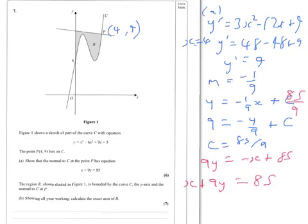The next part: the region R shown is bounded by the curve, the y-axis, and the normal. Showing all your work, calculate the exact area of R. So what we've got to do here is find the area under the curve, which is found by integrating the curve, and then subtract that from the area of this trapezium here.